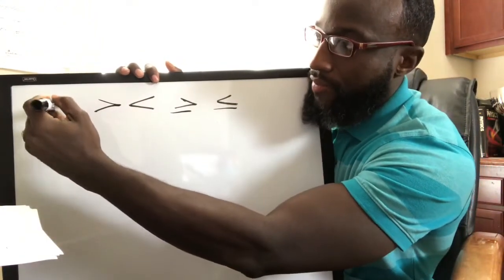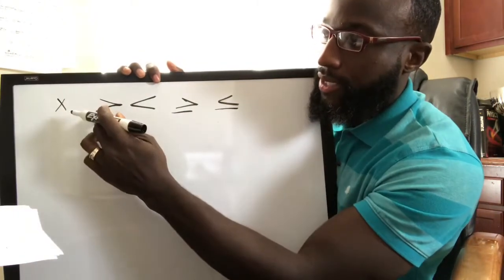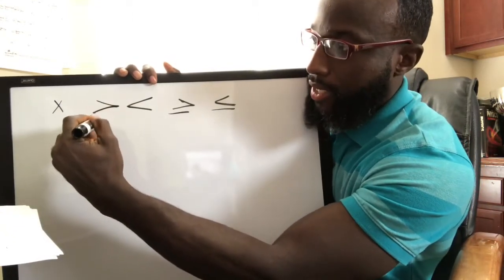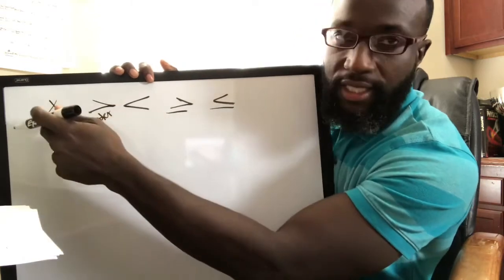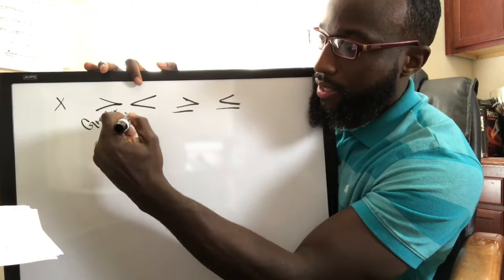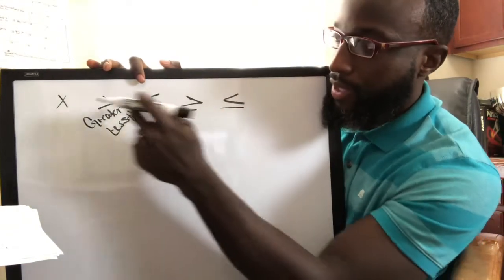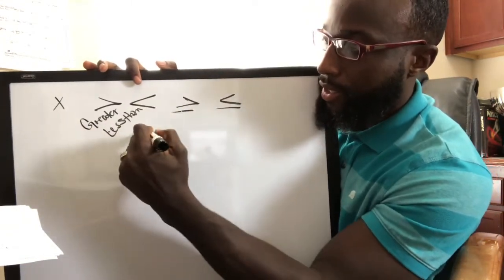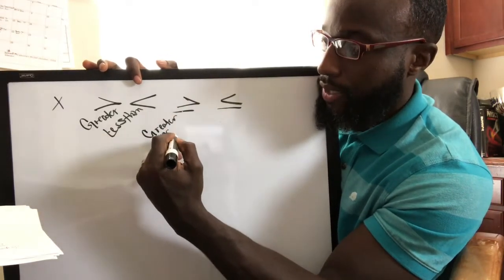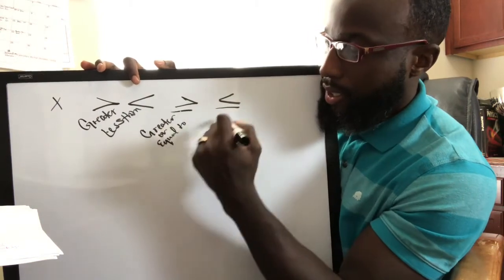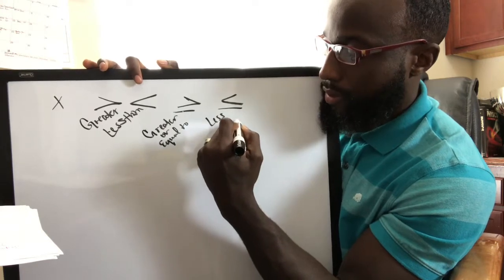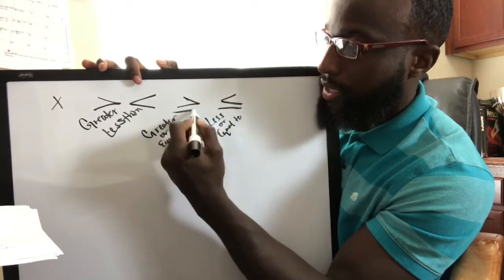If the variable is over here, this means that x is greater than a number — so that's greater than. If the sign is facing the variable, it's less than. Away from or open to the variable, it's going to be greater than or equal to. And then here is less than or equal to. That's what this line under the symbol means — equal to.